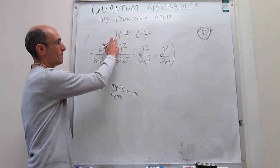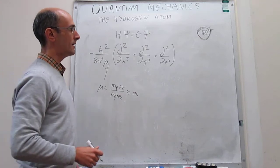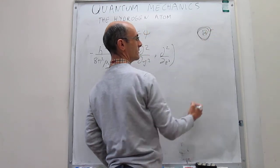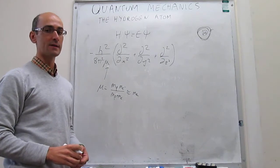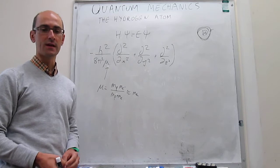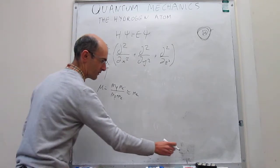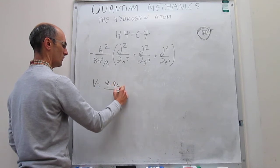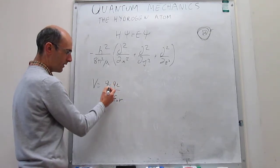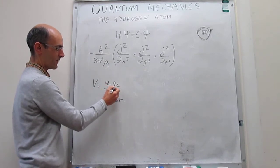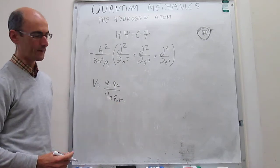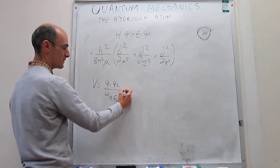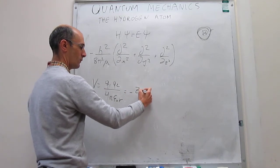We also have to consider the potential energy term in the Hamiltonian operator. A key contribution to the potential energy term is the fact that the electron is negative and the charge in the nucleus — in the case of the hydrogen atom — is positive, so there's going to be electrostatic attraction. The way we write these electrostatic attractions is using Coulomb's law: the potential is equal to q1 times q2 over 4 pi epsilon-naught times r, where these are the charges of the two particles, the permittivity of vacuum, and the distance between the two particles.